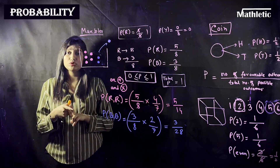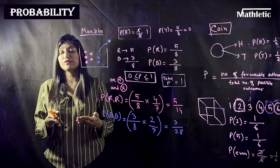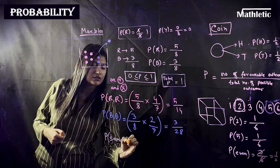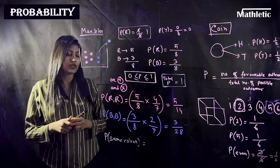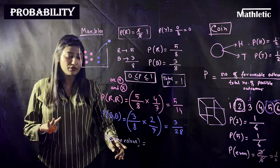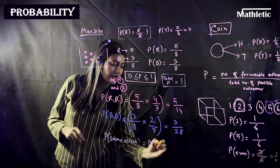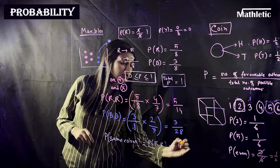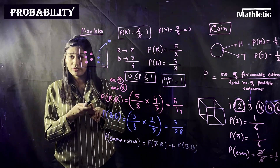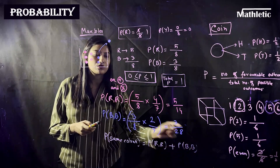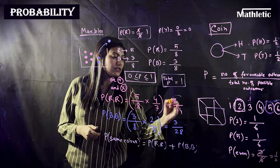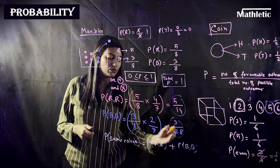If the question asks for the probability of selecting two marbles of the same color, it can be two red or two blue. This is an OR condition, so we add the individual probabilities. We have already calculated P(both red) = five-fourteenths and P(both blue) = three-eighths × two-sevenths, so we add them together to get the probability of same color.